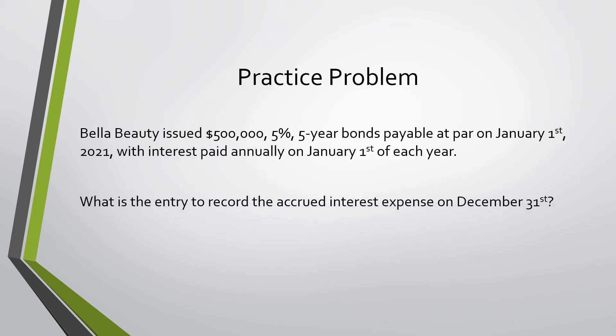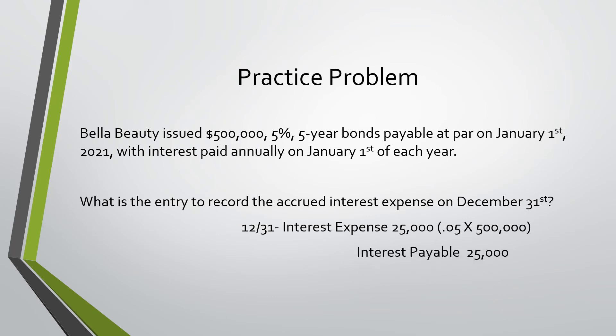The next question asks: what is the entry to record the interest payment on January 1st? Because this would be January 1st of the next year, we have to accrue interest for the year. We would do this by debiting interest expense for 25,000 — found by taking 5% of 500,000 — and instead of crediting cash, we would credit interest payable, because on December 31st we are not paying cash. We are only accruing the interest and will then pay it on January 1st of the following year.